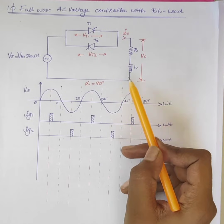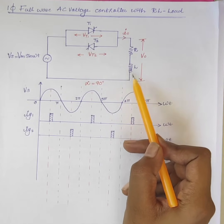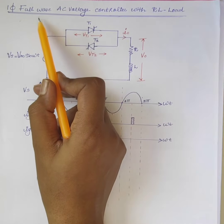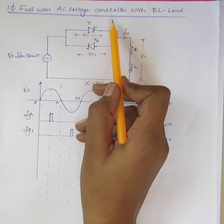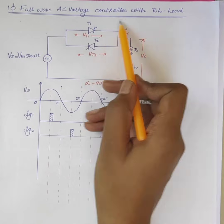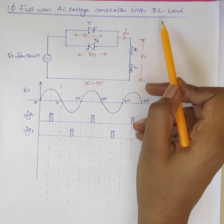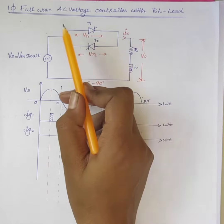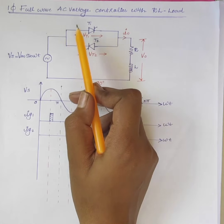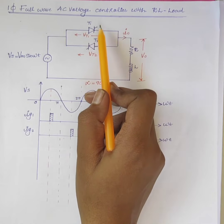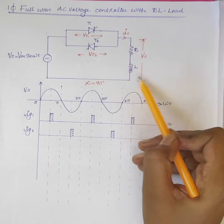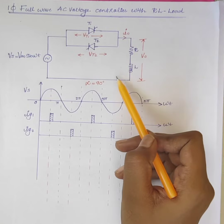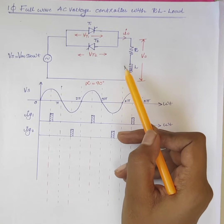Hello students. In the last class we discussed single phase full wave AC voltage controller with resistive load. Today we will discuss single phase full wave AC voltage controller with RL load. The circuit diagram is shown here.